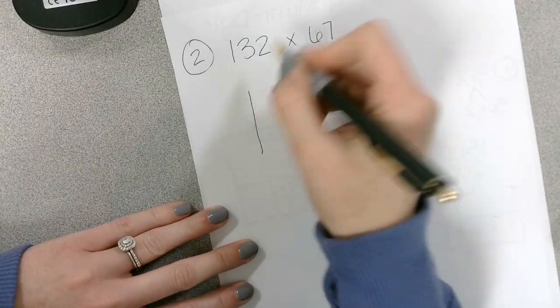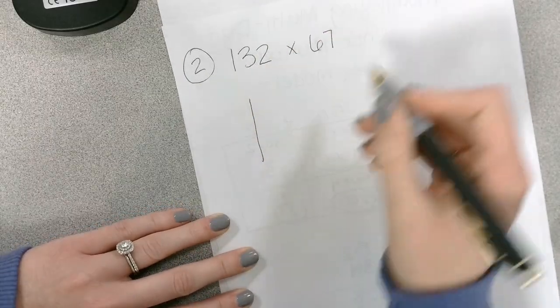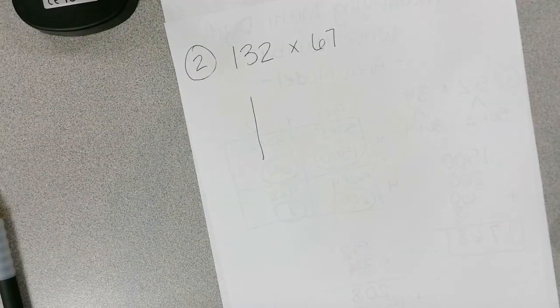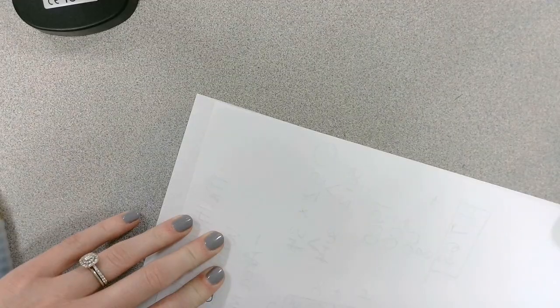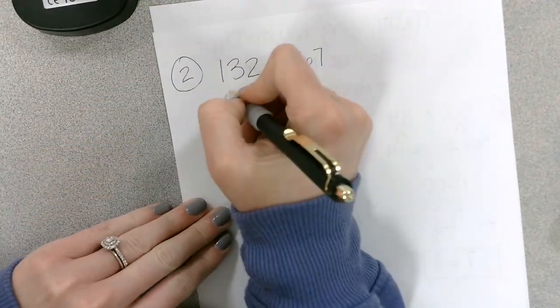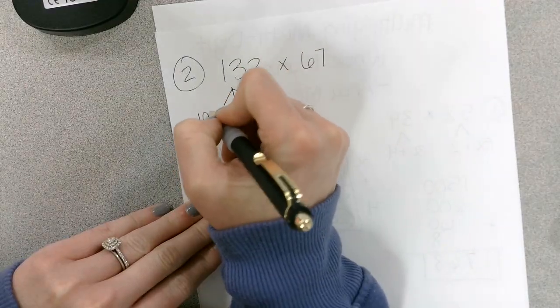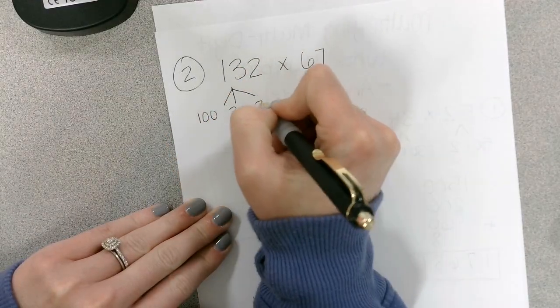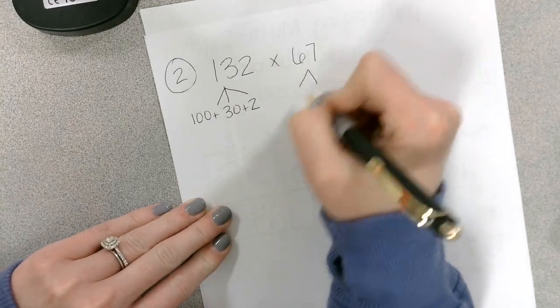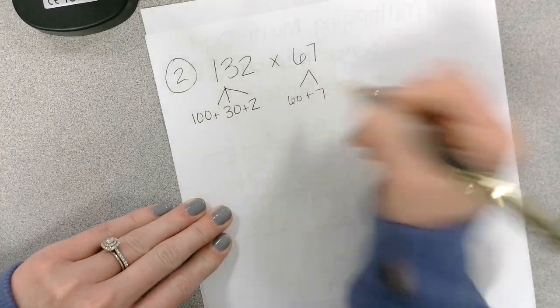I'm going to break it apart and two. Oh, I went ahead and drew my area model first. Hold on. Let's erase that real quick. I'll wipe it out. So this would be broken apart into three numbers: 100, 30, and 2.